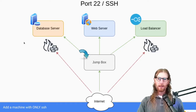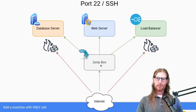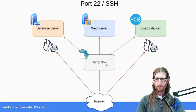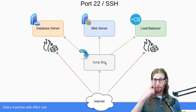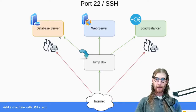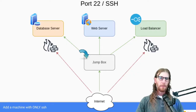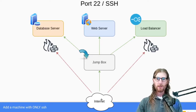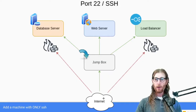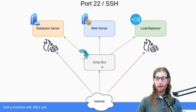This is where the idea of a jump box comes in. From the internet there's a jump box, and the only thing accessible on it is port 22 (SSH). From the internet, port 22 on the database server and the load balancer is blocked. But traffic from the jump box on port 22 is allowed to the database server, web server, and load balancer. So if a legitimate user needs to SSH for maintenance, they go from the internet to the jump box, and from the jump box they get to where they need to go.